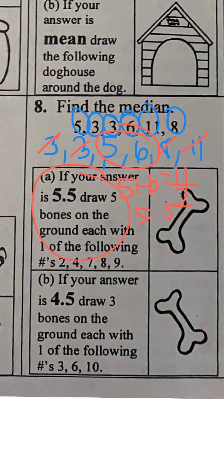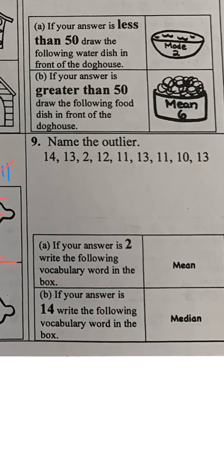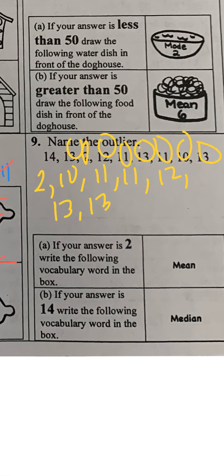The last one I'm going to work on is number 9. Let's put it in order: I have 2, then my next smallest number is 10, then I have 11, 11, 11, 11, then 12, then 13, 13, 13, and then 14. Outlier is a tricky one because we don't talk about it very often, but it just means which one stands out. All these are kind of close together - 10, 11, 12, 13, 14, they're all like four numbers apart from each other.